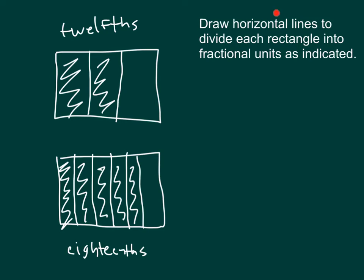Here, we're asked to draw horizontal lines to divide each rectangle into fractional units as indicated. We're looking to take this one to twelfths. The whole thing is 1; we divided it into 3 parts, so we have thirds, and we're looking at 2 of those — so that's two-thirds. Now, we have to draw horizontal lines to get to twelfths. If we only drew 1, we'd be getting into sixths. So, let's draw 1 first, and then draw 2 more, so that we get twelfths.